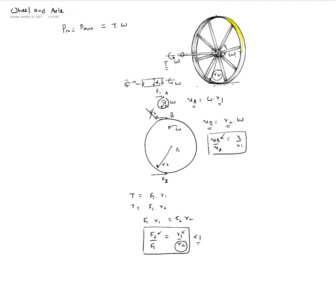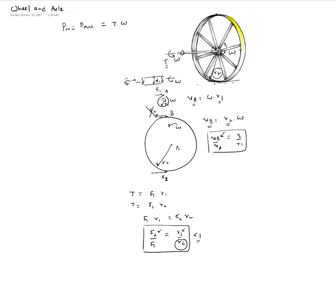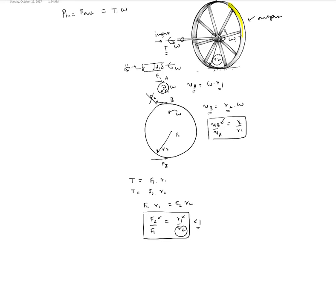This was the scenario where the input is the axle and the output is the wheel. Now consider the reverse direction: the input is the wheel and the output is the axle. You find this in your car's steering system — a large steering wheel that you rotate to turn the car. Turning the steering wheel requires quite a bit of force.